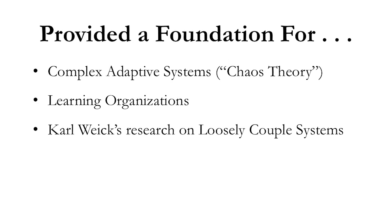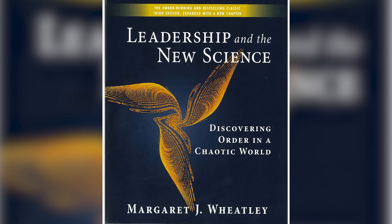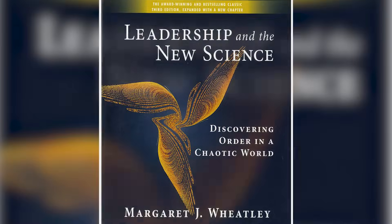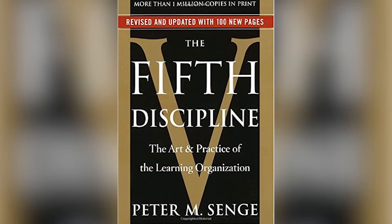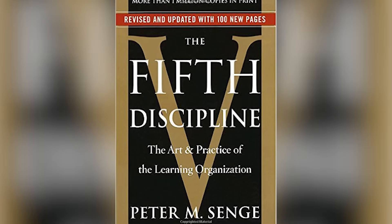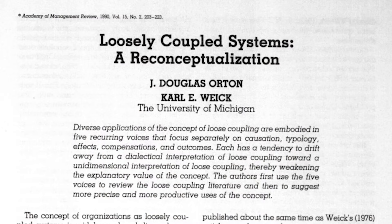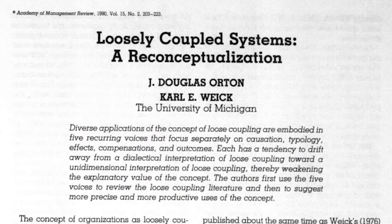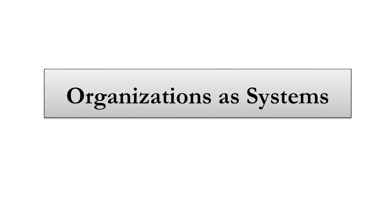Systems theory has not necessarily been used in a lot of very specific ways as it is. It was more like an opening — an open door leading to a whole other set of precise theories to look at organizations. Complex adaptive systems, or chaos theory as it's sometimes called, was built upon the foundation of systems theory. Learning organizations is another school of thought that came out of systems thinking. And Carl Weick's research on loosely coupled systems is a direct outgrowth of the systems point of view. So systems theory has provided a powerful set of concepts, a vocabulary, and a whole way of thinking about organizations that is a direct counterpoint to the classical management era.